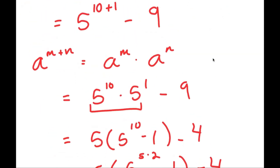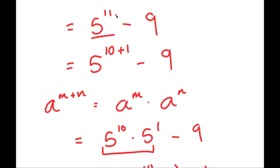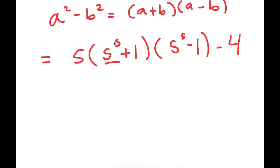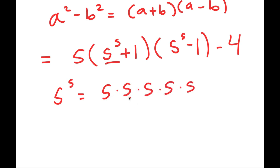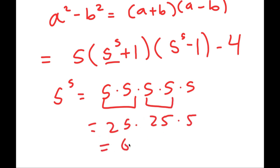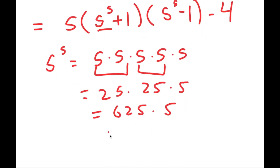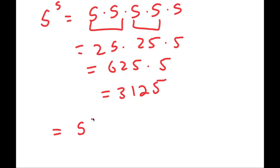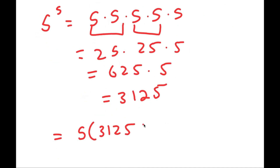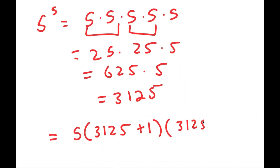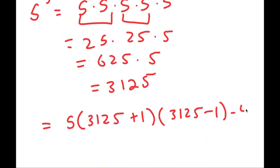Earlier we had 5 to the power of 11, which was quite difficult to solve. But now we have 5 to the power of 5, which is much simpler — it's just 5 multiplied by itself 5 times. 5 times 5 is 25, times 5 is 125 — wait, 25 times 25 is 625, times 5 is 3,125.